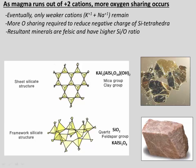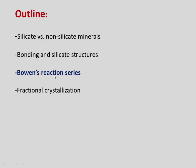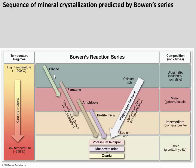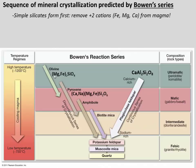Now let's look at Bowen's Reaction Series, which encapsulates all of these ideas in a single model. Imagine cooling a magma chamber from high to low temperature. The first minerals to form are the simple isolated tetrahedra like olivine — but these can only form if we have magnesium and iron available, those strong +2 cations needed to balance the charge. So if those are available, olivine will form. The same with pyroxene, which also relies on a lot of these +2 cations because there's not much oxygen sharing going on.